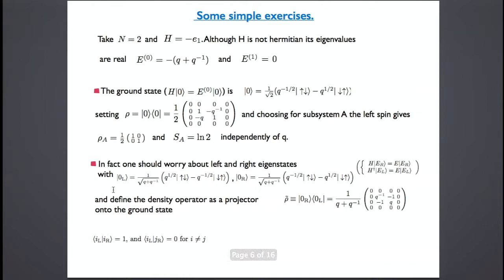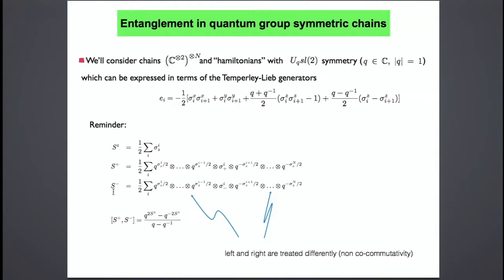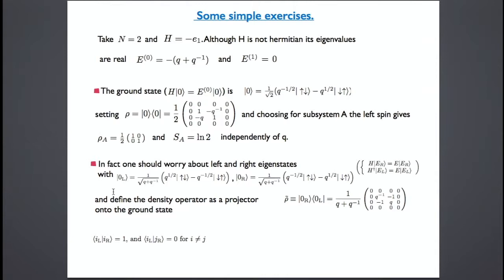I want to make a spin chain out of these generators and ask what the entanglement is. Let's take n=2: two spins. The Hamiltonian is just E_1 acting on two spins, and it's an easy exercise to show that although it's not Hermitian, it has real eigenvalues: one which is zero (non-degenerate), and one which is −(q + q^{−1}) (degenerate three times). If q is taken in the proper quadrant of the circle, −(q + q^{−1}) is the lowest energy and is associated with the ground state.